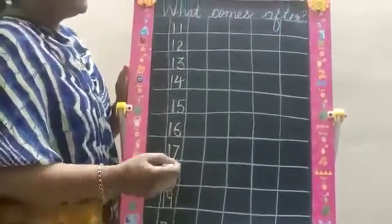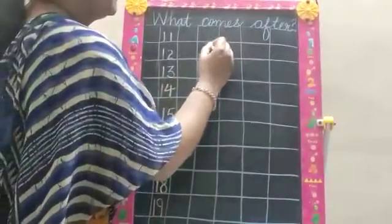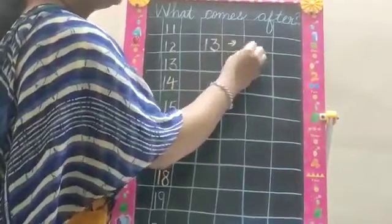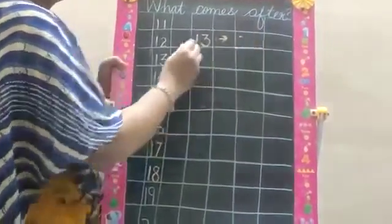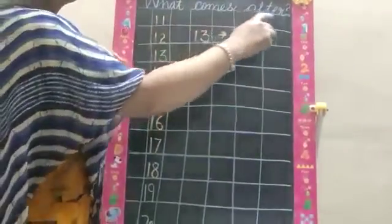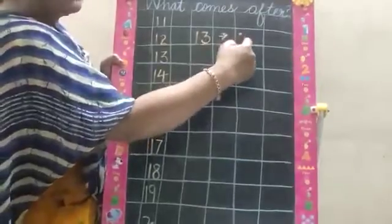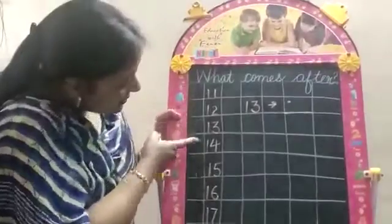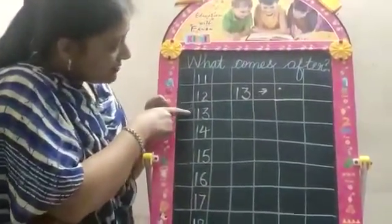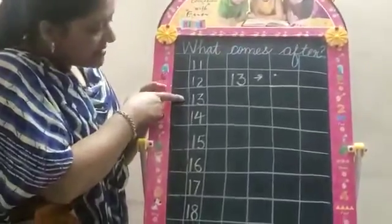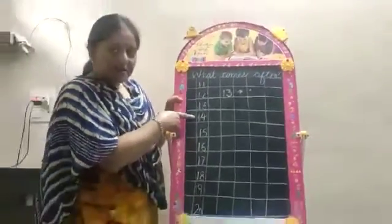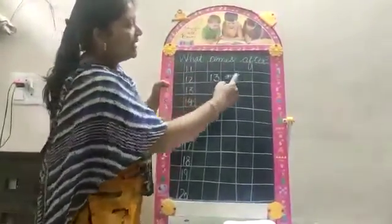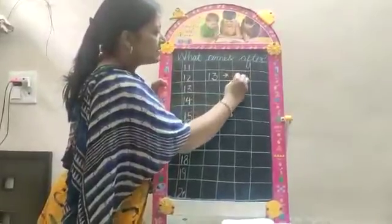Now I am going to write the number 13. What will be the next number? After 13, what comes after? After means what is the next number? So now you just go through the line: 11, 12, 13. There is 13, and what is the next number after 13? The next number is 14. So we will write the next number is 14.